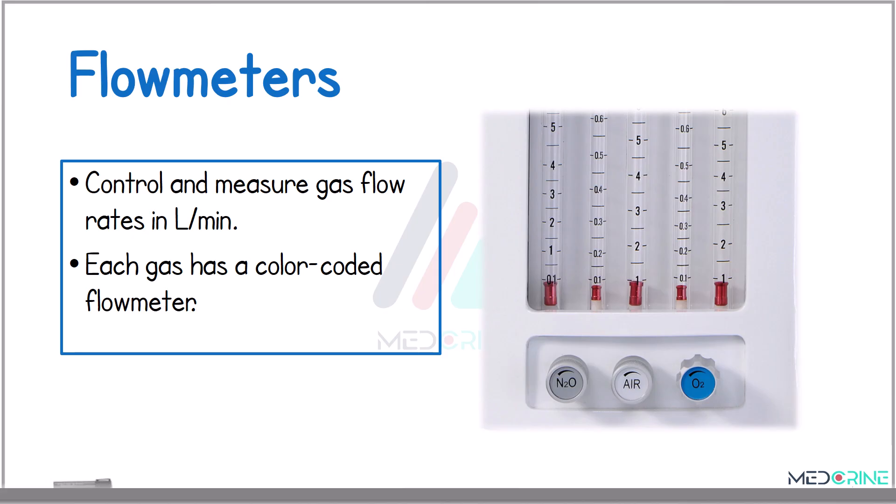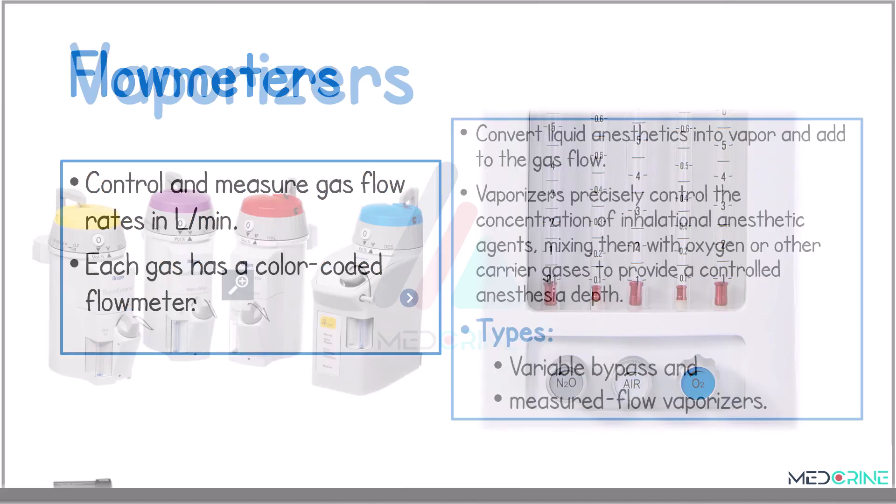Flow meters control and measure the flow of gases in liters per minute. Each gas has its own color-coded flow meter, allowing precise control of the flow rates to the patient.